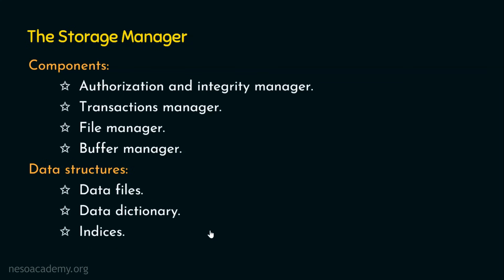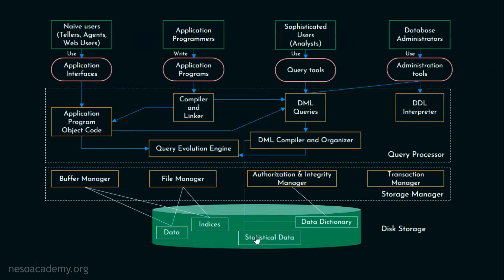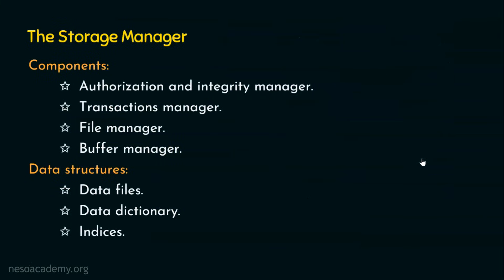The statistical data component stores statistics about the data, which helps us make decisions for managing the databases. In part one of the database system architecture, we focused on the storage manager and the disk storage. In the next presentation, we will focus on the remaining part, which is the query processor. I hope the session is informative — thank you for watching.